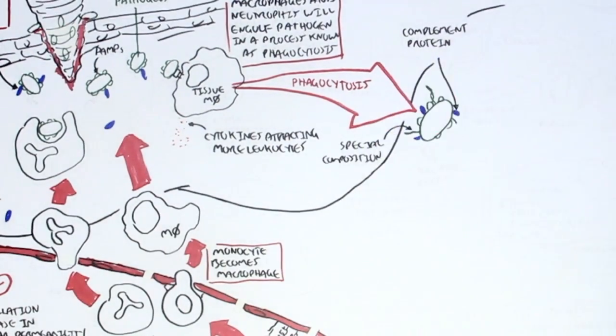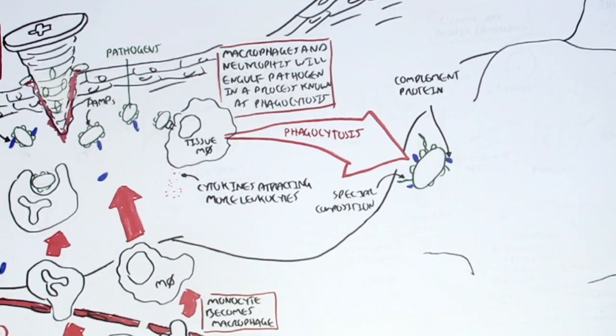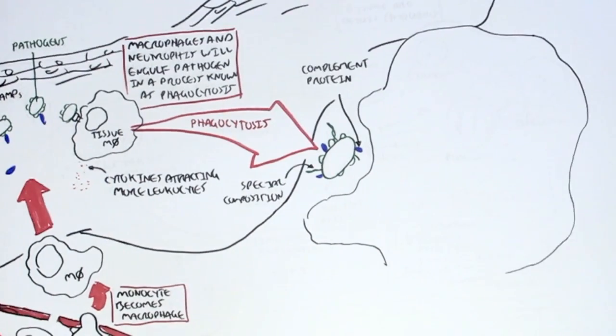Now the complement protein can help in the phagocytizing process, so the complement proteins can bind to this pathogen as well.